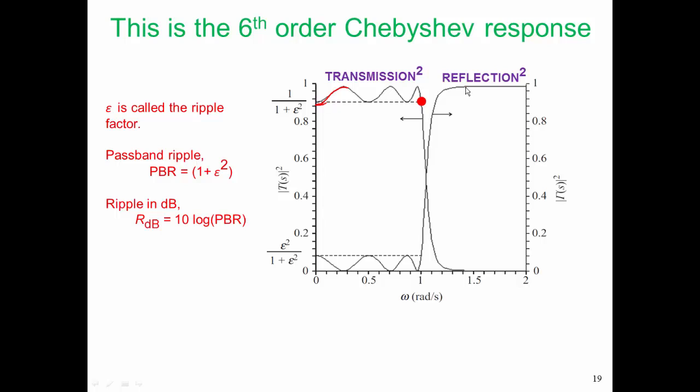If we look at the opposite of transmission, which is reflection, so here is the reflection squared again, we'll see that wherever we have a lull in our transmission response, we'll have a peak in the reflected response.